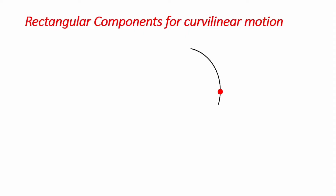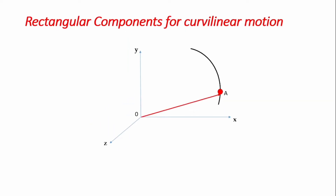Beginning with curvilinear rectangular components, we introduce our coordinate system and identify the location as a position vector r, where r is a function of x and y — the two coordinates used to describe the position of the object. If the object moves from point A to another point B, we will need another position vector to describe the position at point B, and we can say that the object has been displaced from A to B via a dimension change in r.